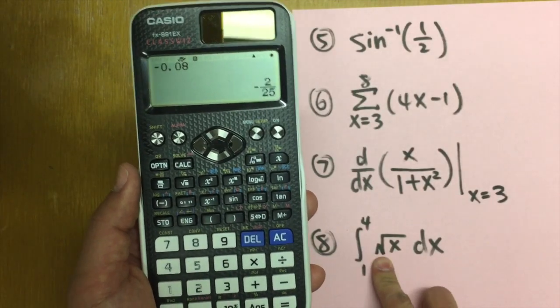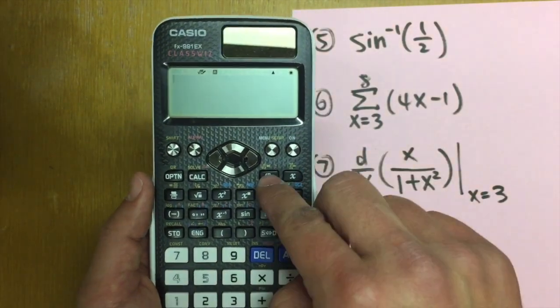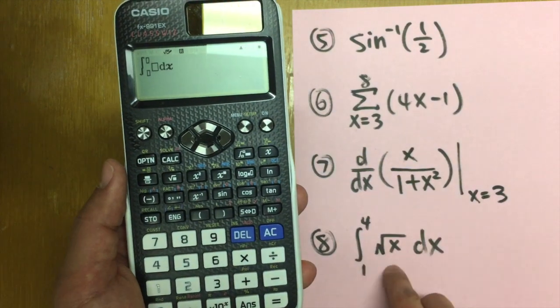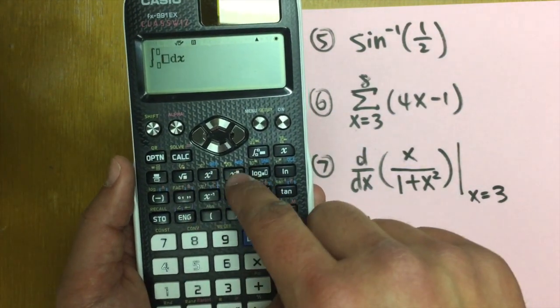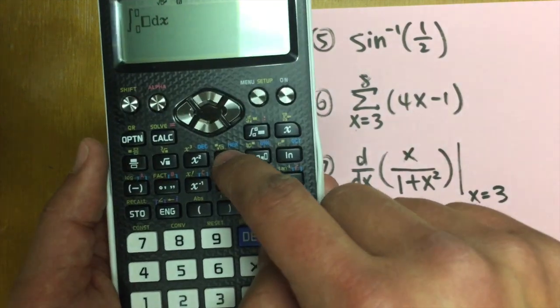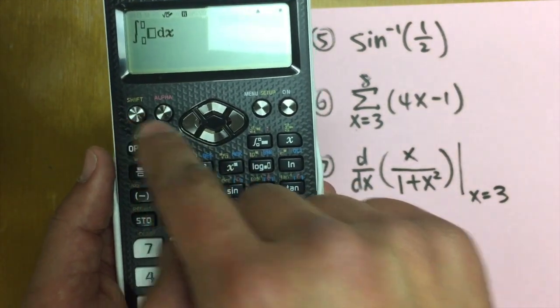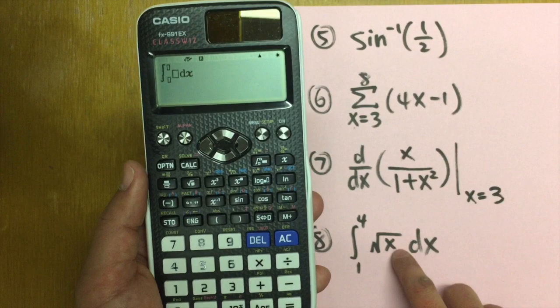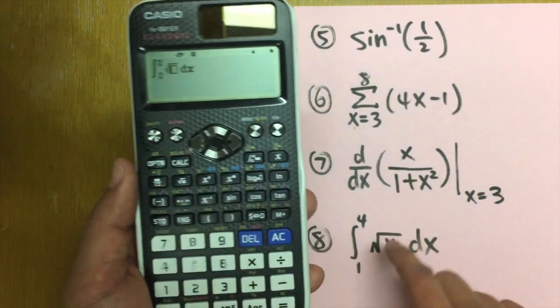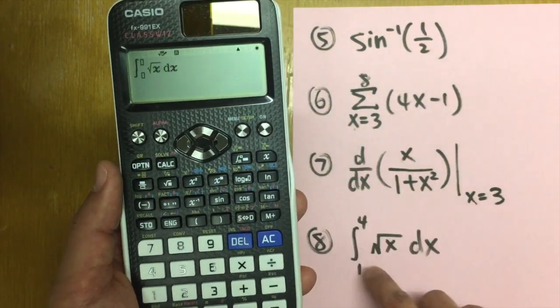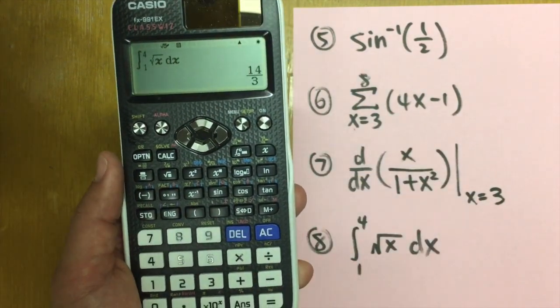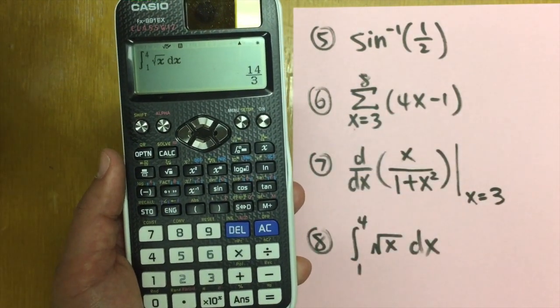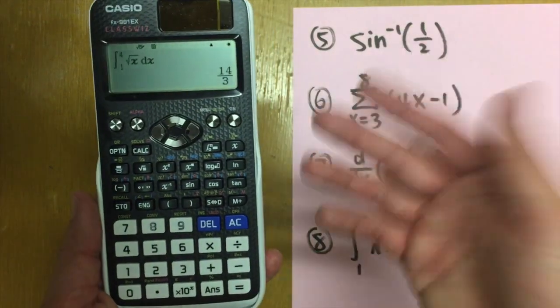Last one, we have this integral. So let's go ahead and do the integral. Hit this right here. And inside, we have the square root. So here's a square root button. Notice that if you want to enter any other radical, you have to use this key in yellow. So be sure you hit shift and that. But in here, we just need a square root. So let's go ahead and hit the square root. And we have the x. And it goes from 1 to 4. And we have the answer 14 over 3. How cool is this calculator?